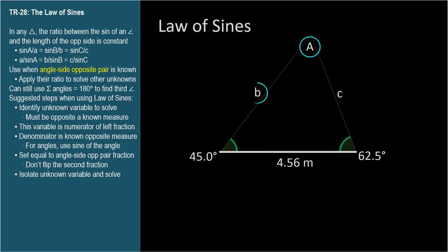We have three unknowns, an angle and two sides. We can look for side angle opposite pairs, but we won't find any. But we do know two angles, so we can use them to find the third, which is 72.5 degrees. Now we have a side angle opposite pair and can use the law of sines.